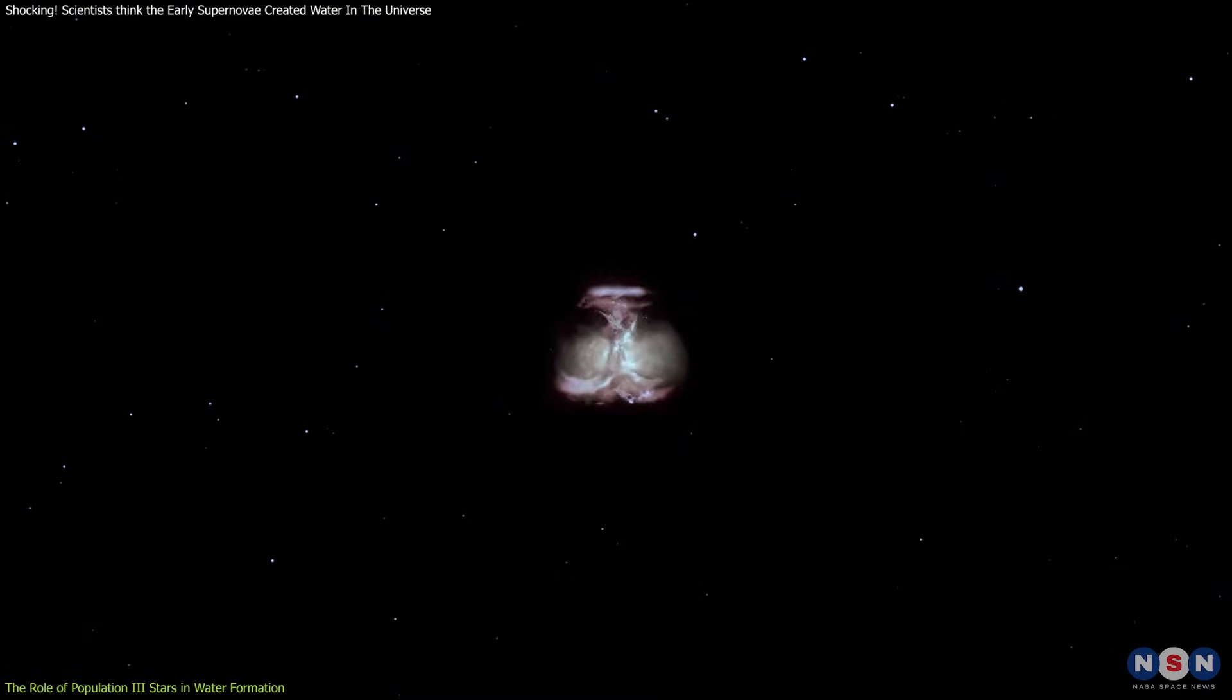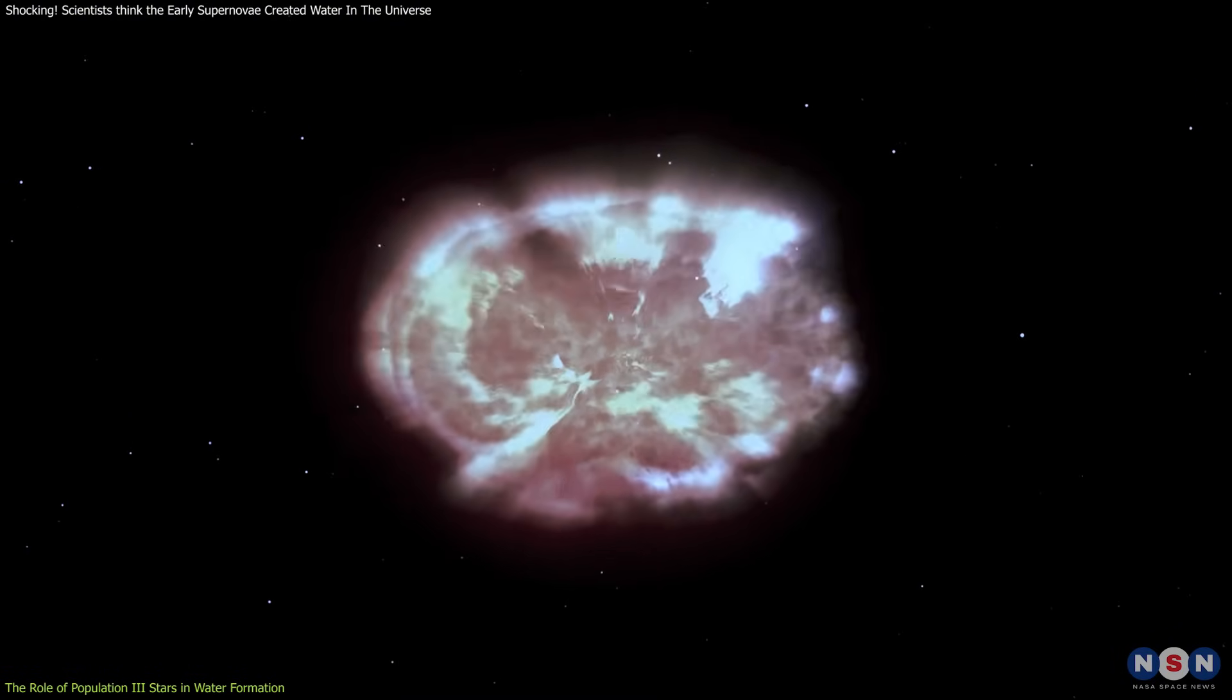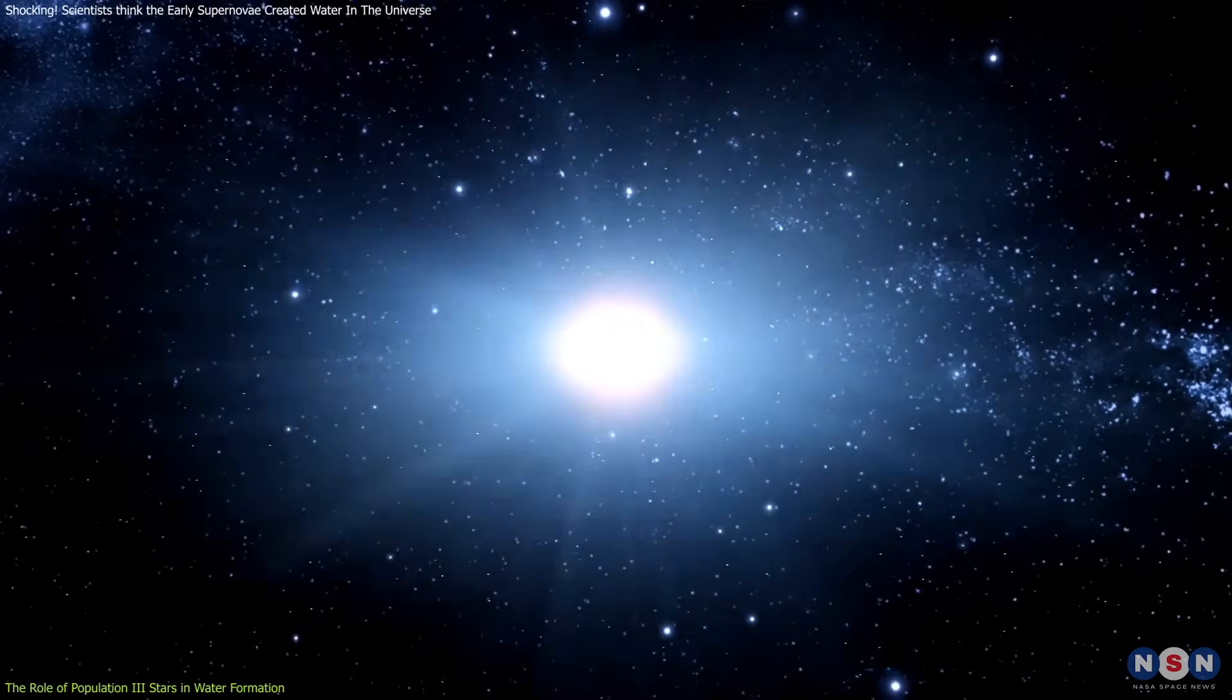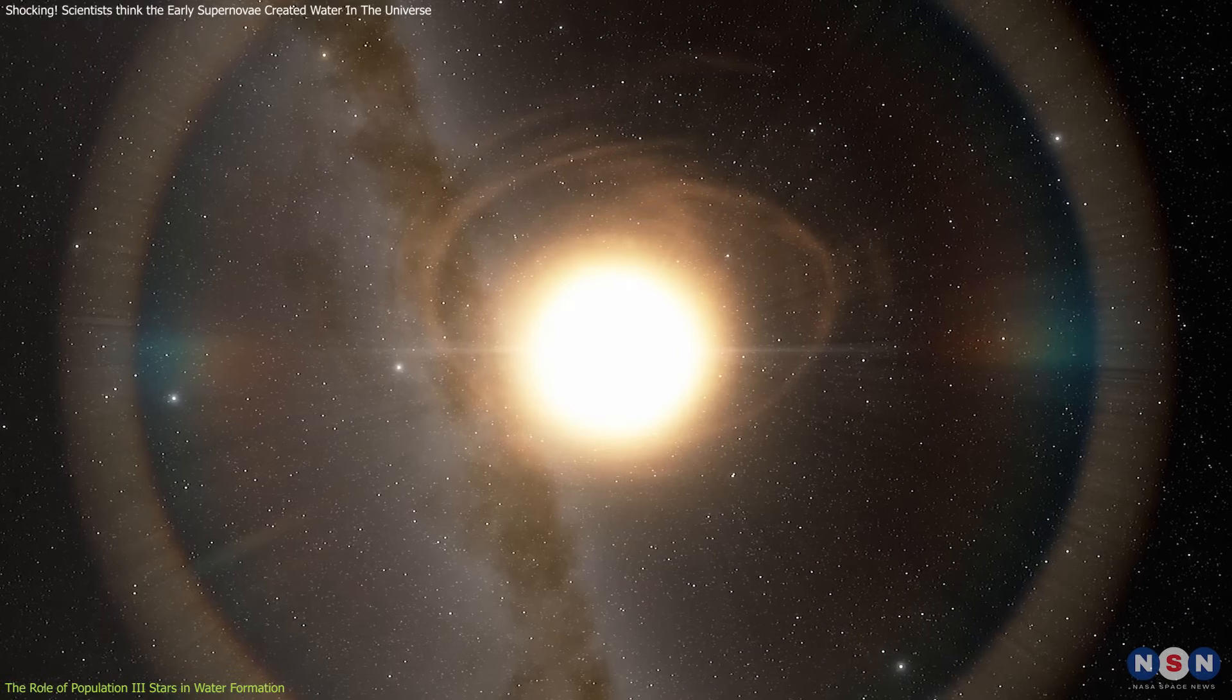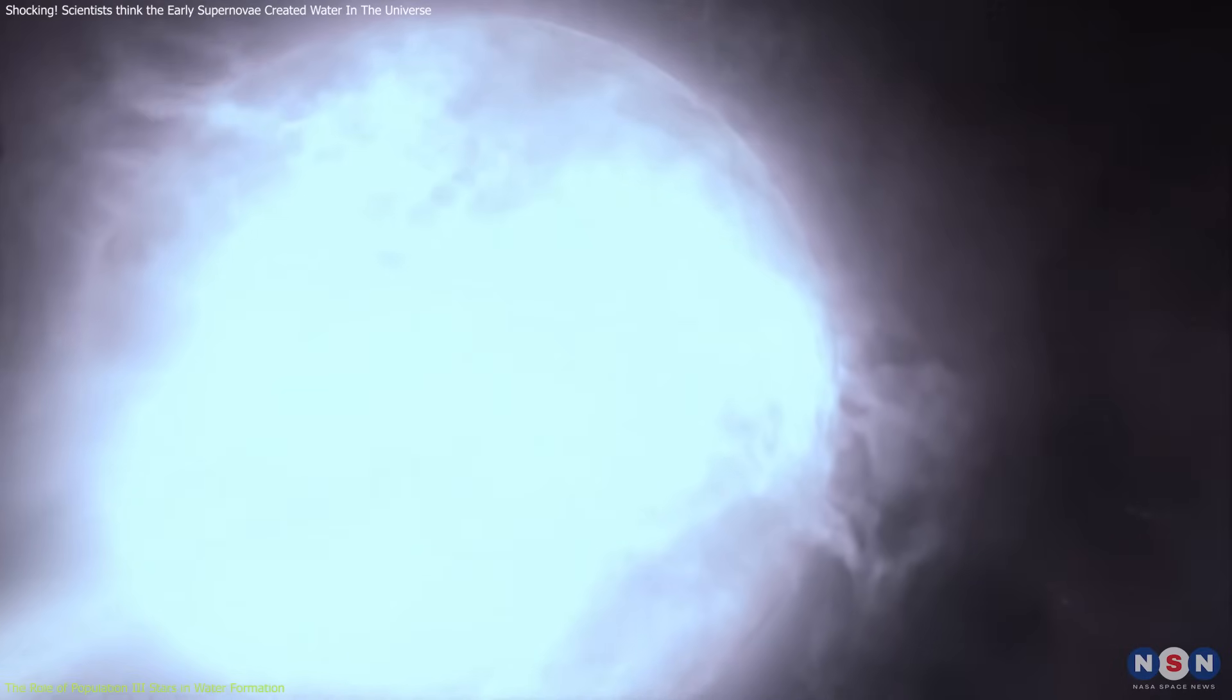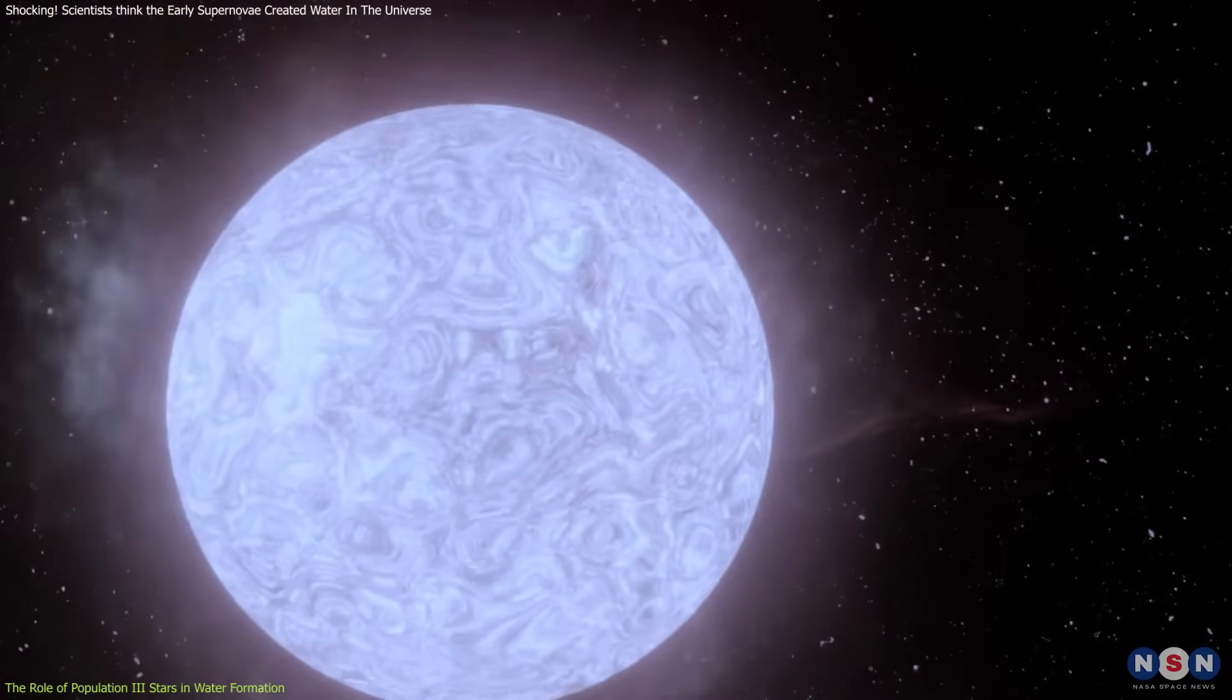When these massive stars reached the end of their lives, they exploded in cataclysmic events known as supernovae. There are two primary types of supernovae associated with Population III stars: core collapse supernovae and pair instability supernovae. Core collapse supernovae occur in stars with masses around 10 to 50 solar masses, while pair instability supernovae are theorized to happen in stars exceeding approximately 140 solar masses.